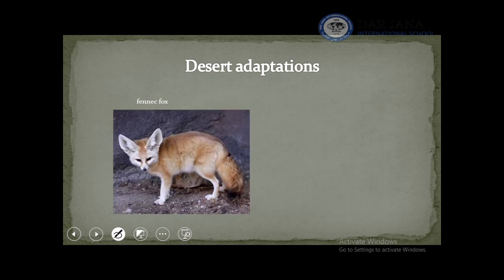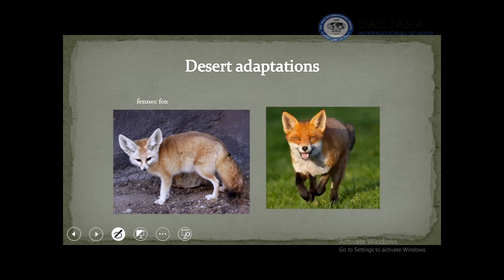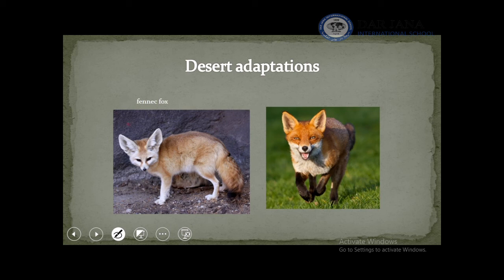Another type of adaptation we covered is the fennec fox. This fox lives in the desert, so it needs to stay cool. For that, they have large ears so they can release heat outside their body, and they have a thin fur — not a thick one — to keep them cool.